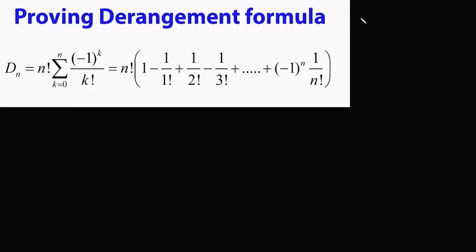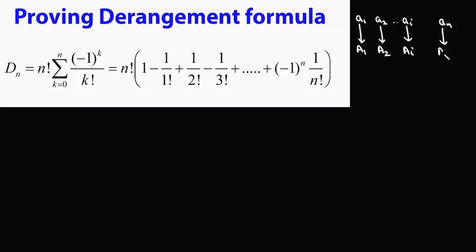In derangement, we typically have n objects — say a1, a2, ai, an — and each object has its assigned place. So a1 has assigned place A1, a2 has assigned place A2, ai has assigned place Ai, and an has assigned place An. In general, when we arrange n objects in n places, it can be done in n! (factorial n) ways.